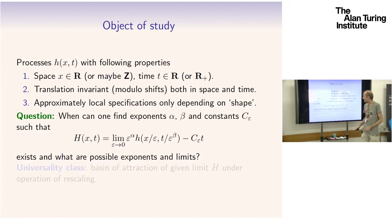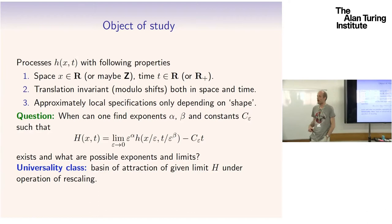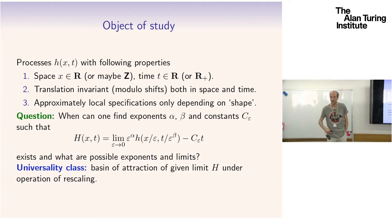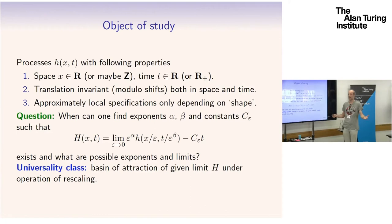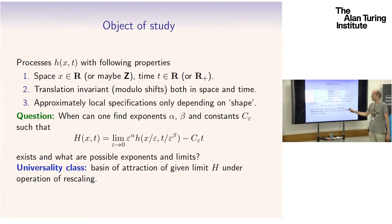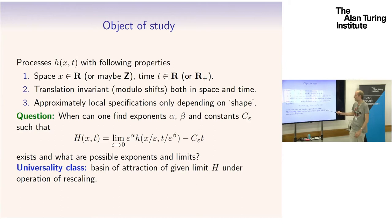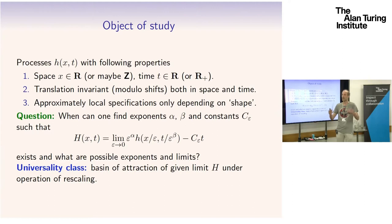A bit of terminology — this is physics terminology. What physicists call a universality class is the collection of all models that have the same limit for the same exponents. For example, if there were no space, one possible limit of that type would be Brownian motion. If you take any random walk and rescale it diffusively, the exponent is one-half, and the limit is Brownian motion. It doesn't really matter what kind of random walk you start from — you always get Brownian motion. So the universality class of Brownian motion includes all possible random walks and lots of things that vaguely behave like random walks.